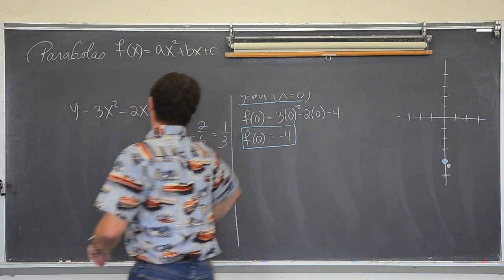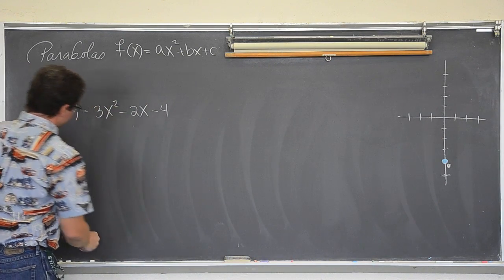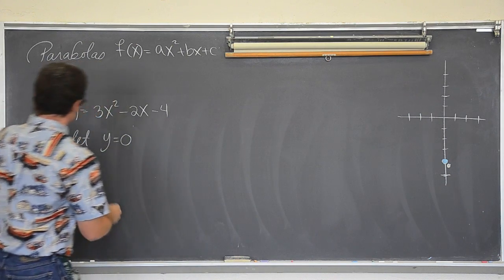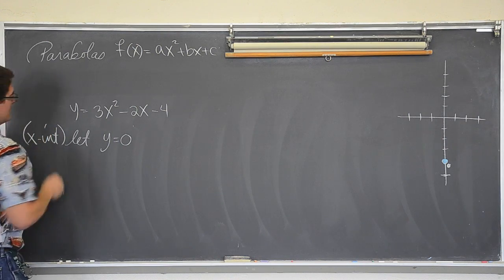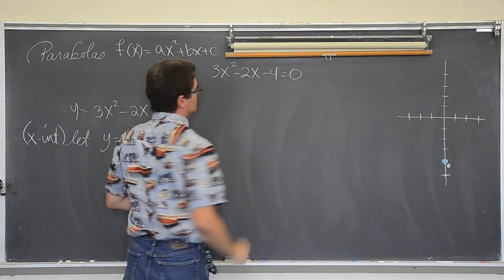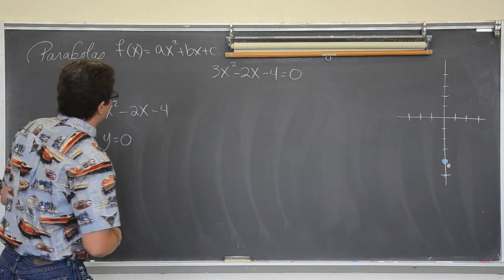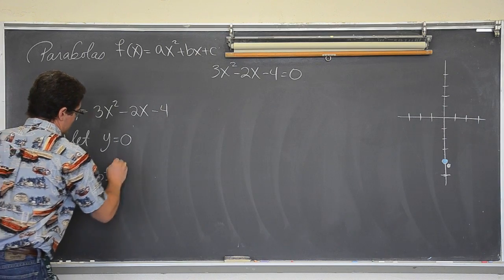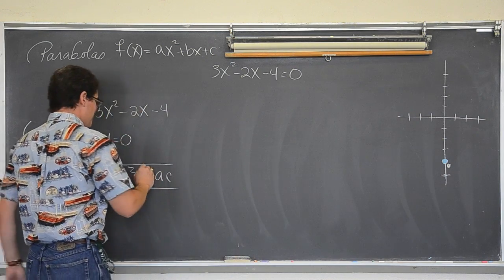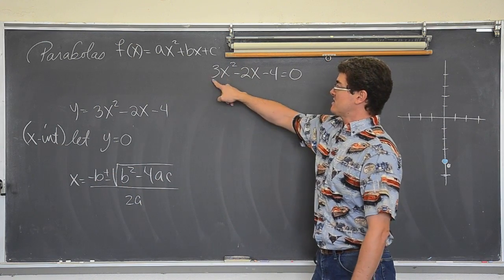Whew, almost erased my problem. Okay. So, I want to find the x intercept of this. That means let y equal zero. So what I want to do is solve for, again the x intercept is solve this equation: 3x squared minus 2x minus 4 equals zero. Alright, let's see what it looks like. With the quadratic formula, in case you did not remember what that is, the quadratic formula is x equals negative b plus or minus the square root of b squared minus 4ac all over 2a. You still with me? Alright.